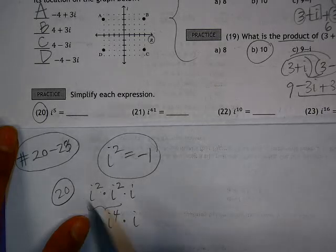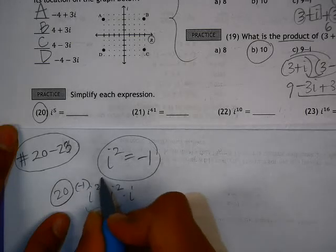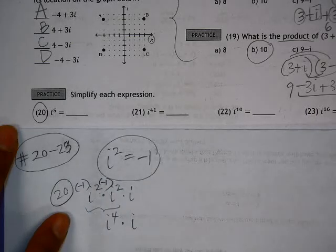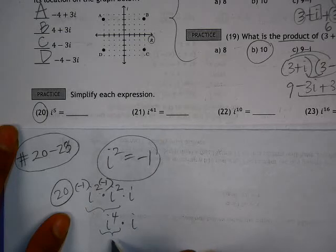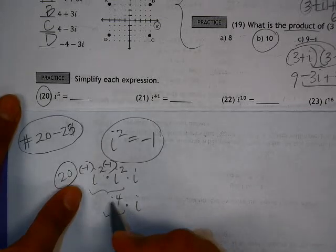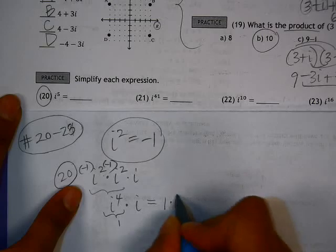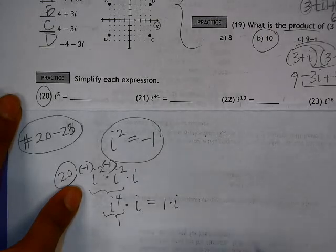If we simplified this, we know i squared times i squared is negative 1 times negative 1. Negative 1 times negative 1 is positive 1. So I'm going to say that i to the fourth is equal to 1. Which makes this really simple, because if i to the fourth is equal to 1, then my answer is just 1 times i, which is equal to i.